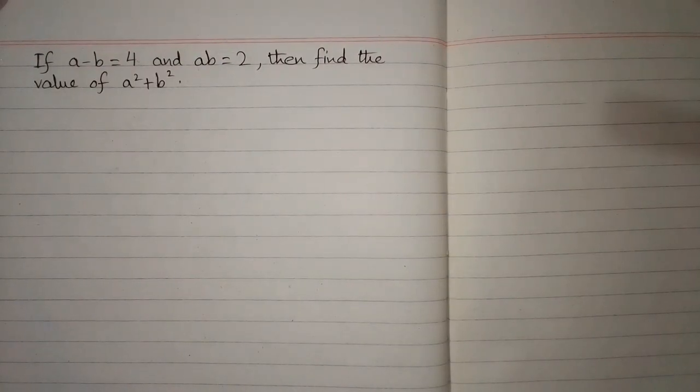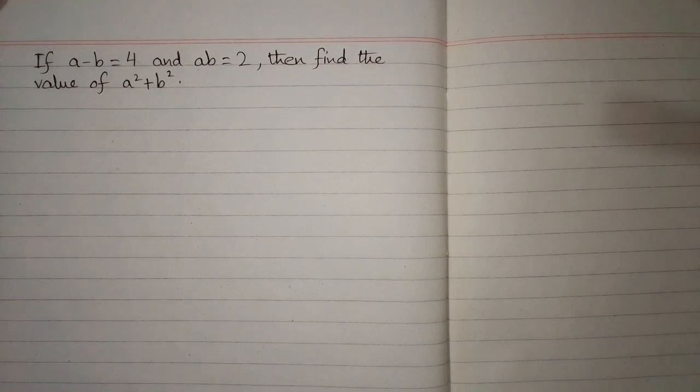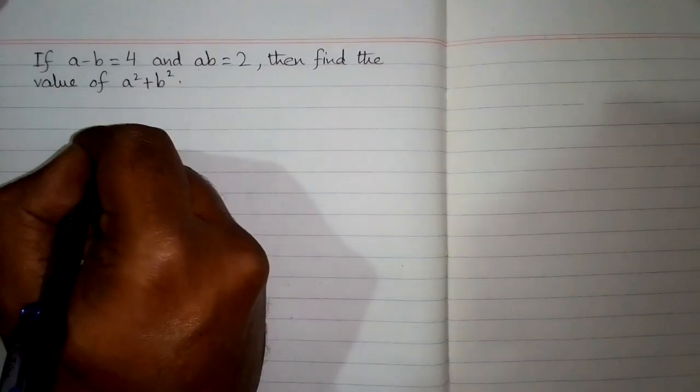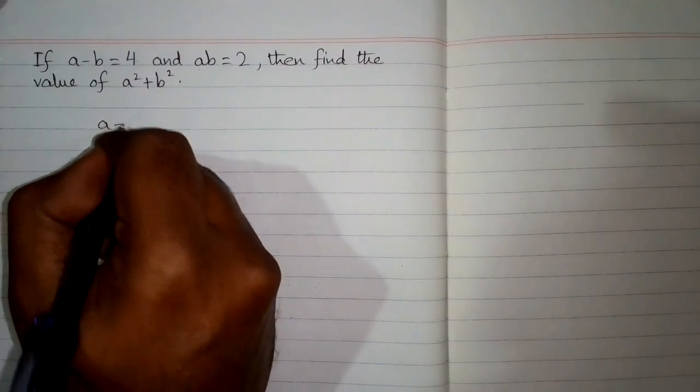If a minus b is equal to 4 and ab is equal to 2, then find the value of a square plus b square. So in order to solve this problem, we can use an algebraic identity which is